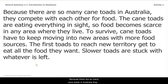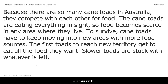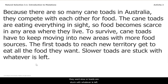Because there are so many cane toads in Australia, they compete with each other for food. The cane toads are eating everything in sight, so food becomes scarce in any area where they live. To survive, cane toads have to keep moving into new areas with more food sources. The first toads to reach new territory get to eat all the food they want. Slower toads are stuck with whatever is left.